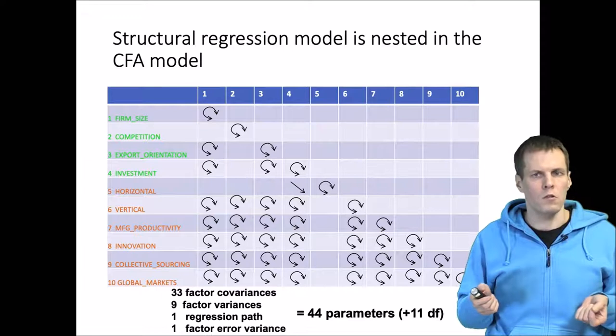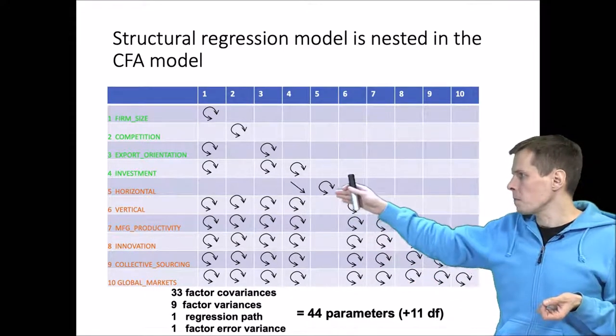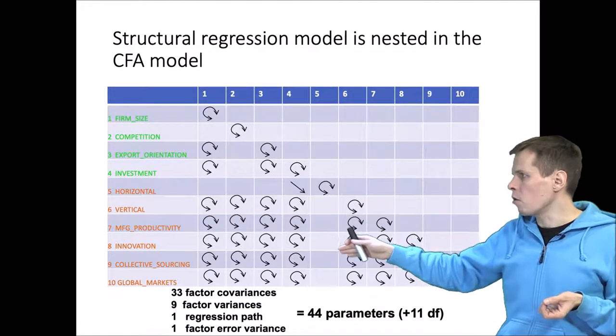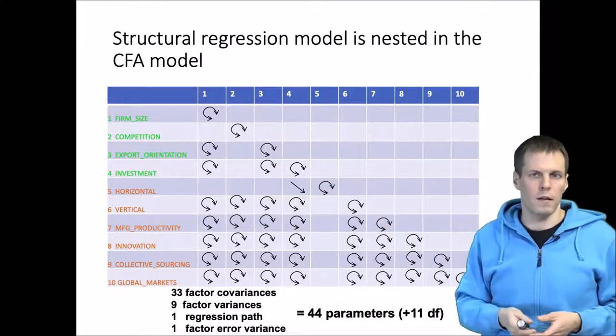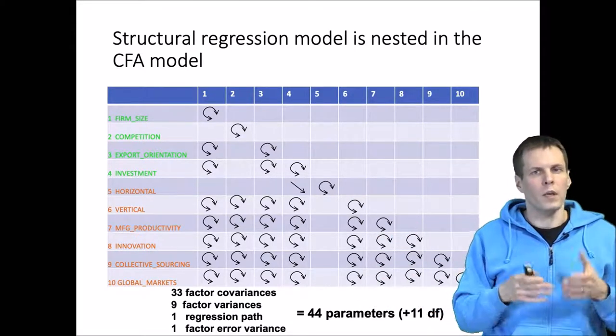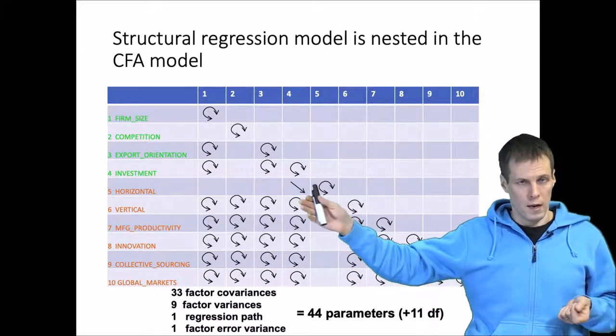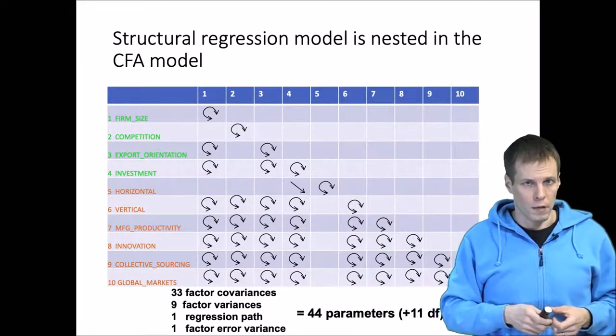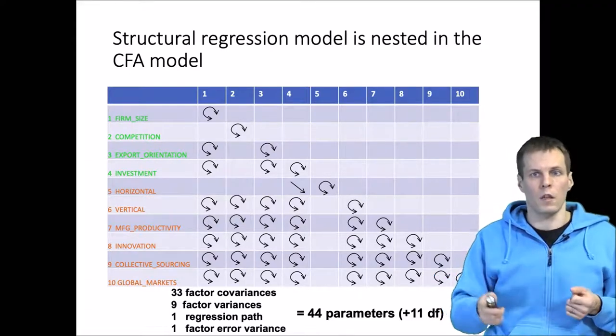We lose all these correlations and that gives us eight degrees of freedom more. Then we add one regression path. That gives us eight degrees of freedom. We take away nine correlations and add one regression path. We gain eight degrees of freedom because we take away nine things and add one thing.